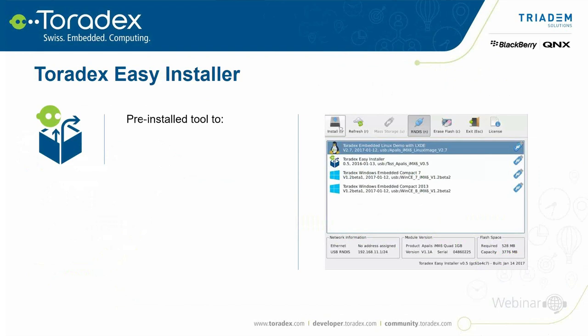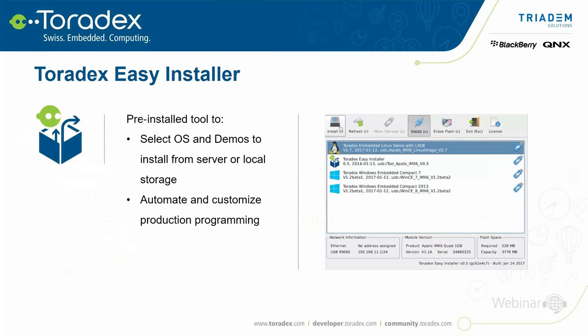Toradex Easy Installer offers some very nice features. Once you boot one of our modules, a dialogue pops up and lets you choose from various installation options — it directly fetches information from our servers. We provide our latest images on our servers, and in the near future we will also add demo images such as the QNX demo. If internet isn't directly available, it's also possible to install images provided on a USB or SD memory card or through a local network. It also helps automate and simplify production programming — you can prepare your software setup on an SD card, boot the module, and Toradex Easy Installer automatically installs your software including bootloader, image, file system, and so on directly onto the module flash.